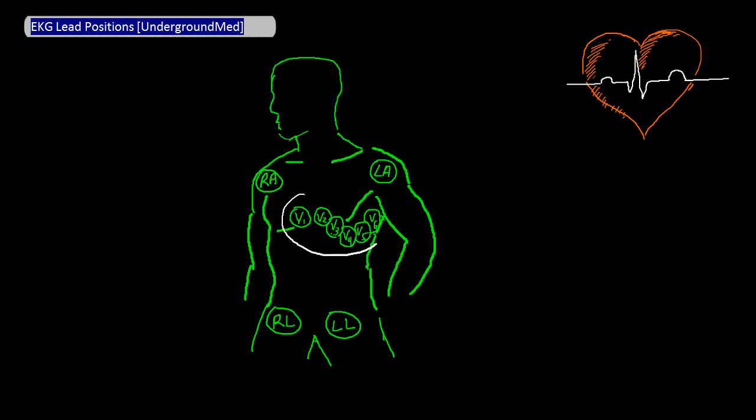The six leads here, V1 to V6, are placed around the heart and are called the precordial leads.